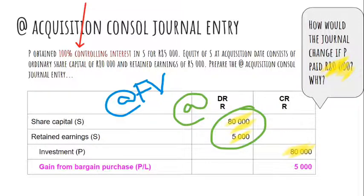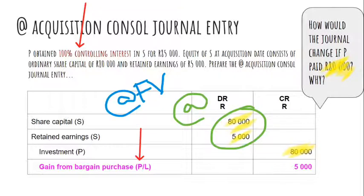The gain from bargain purchase can occur because the seller was acting under compulsion, or there can be other reasons why the parent believes their investment in the net assets of R85,000 should be less than the actual fair value. As long as the net assets have been fairly valued at acquisition date, you can conclude that there's a gain from bargain purchase. Please note that the gain from bargain purchase is recognized in the year of acquisition through profit and loss.